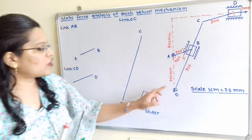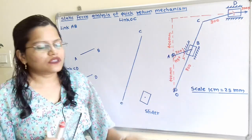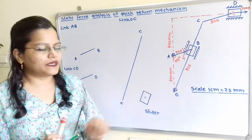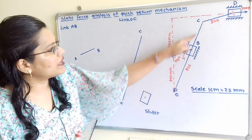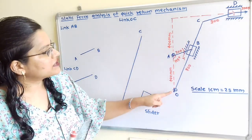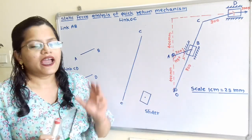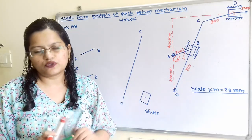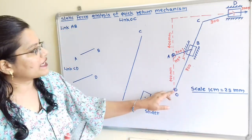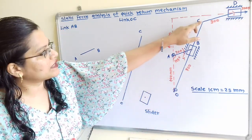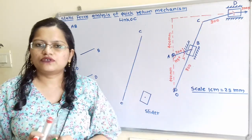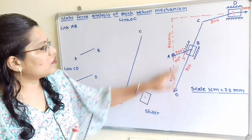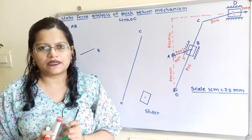Now we draw link OC. This link OC passes through point B, so we draw one line passing through point B. The length is given as 800 mm, so as per this scale we take 32 cm distance and select point C. Link OC is now complete.